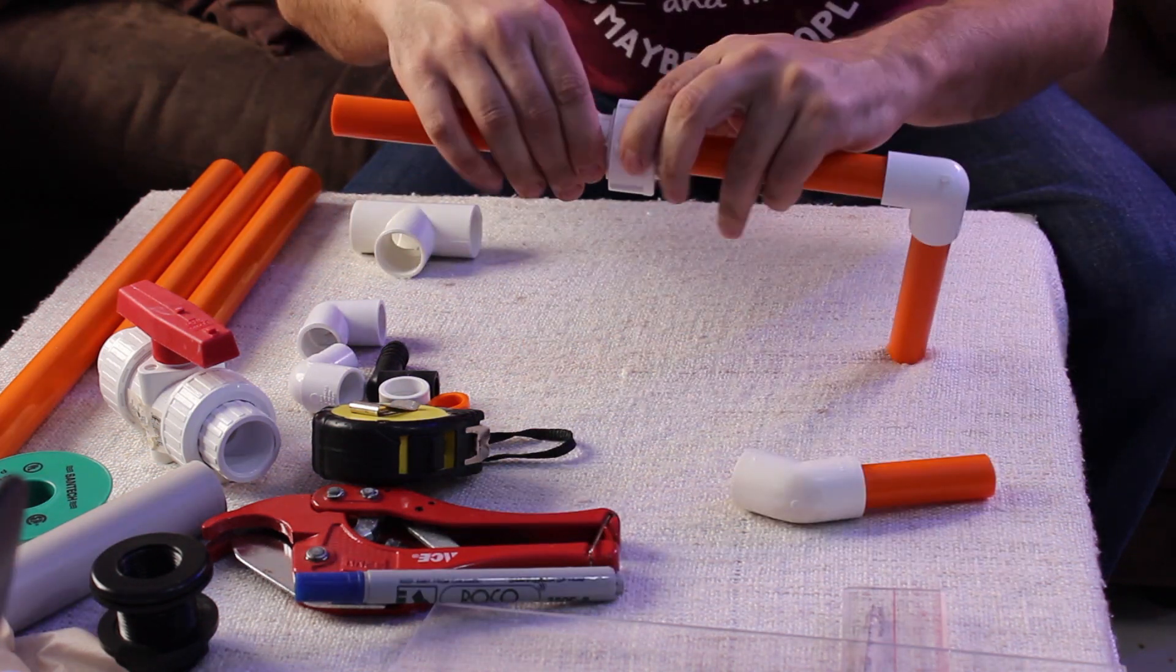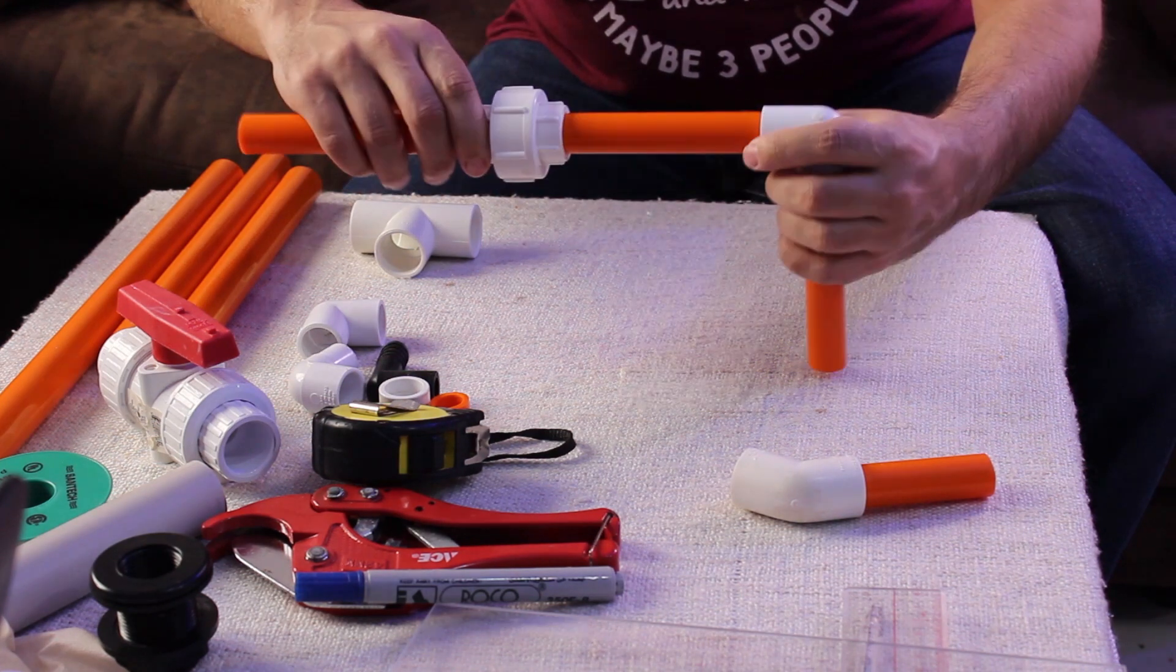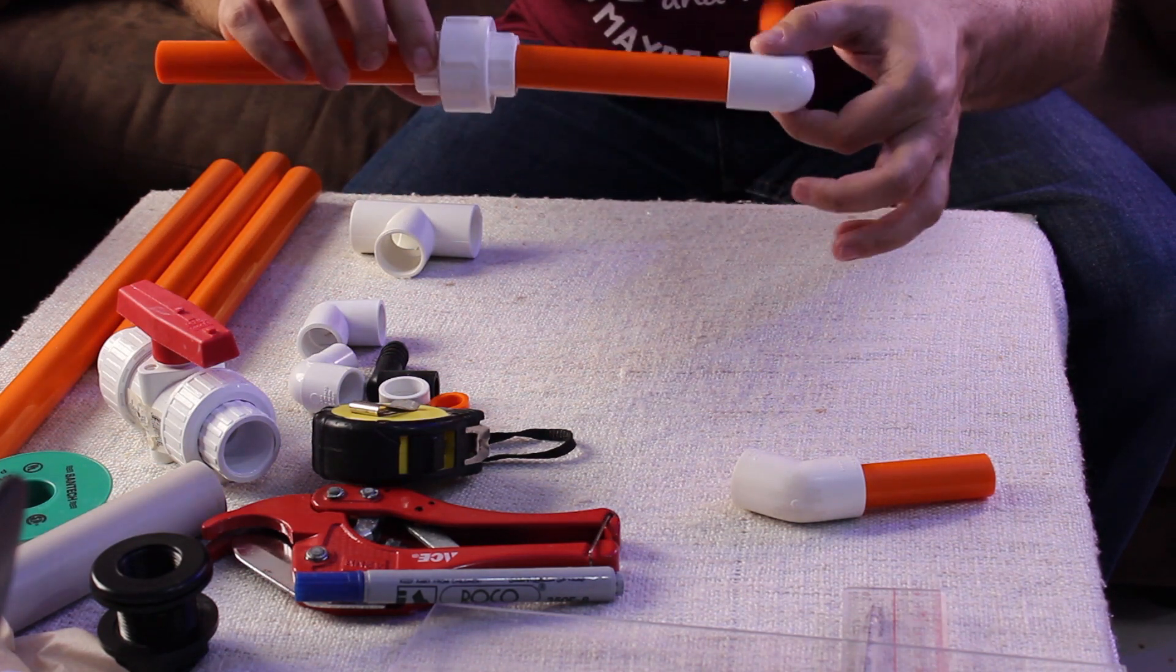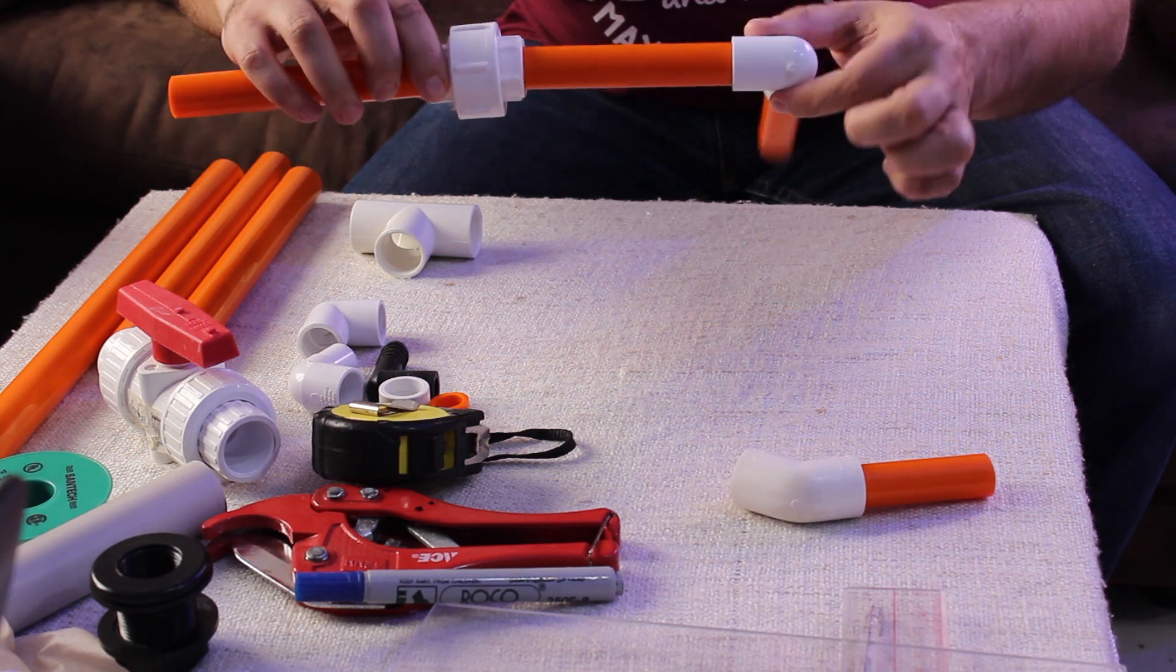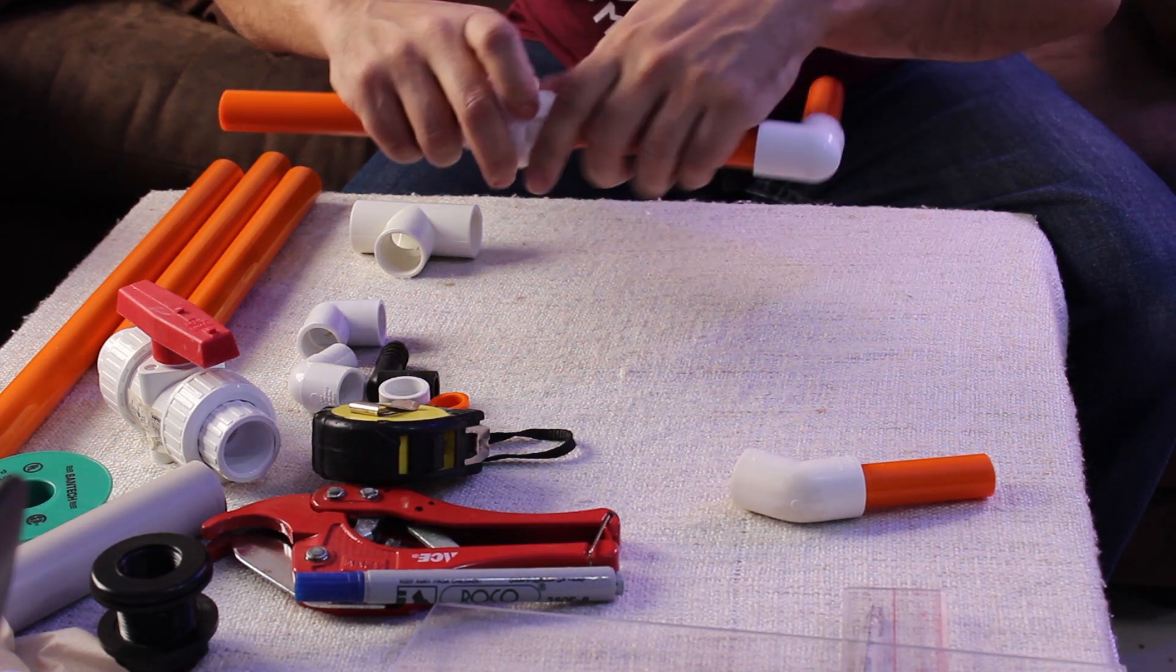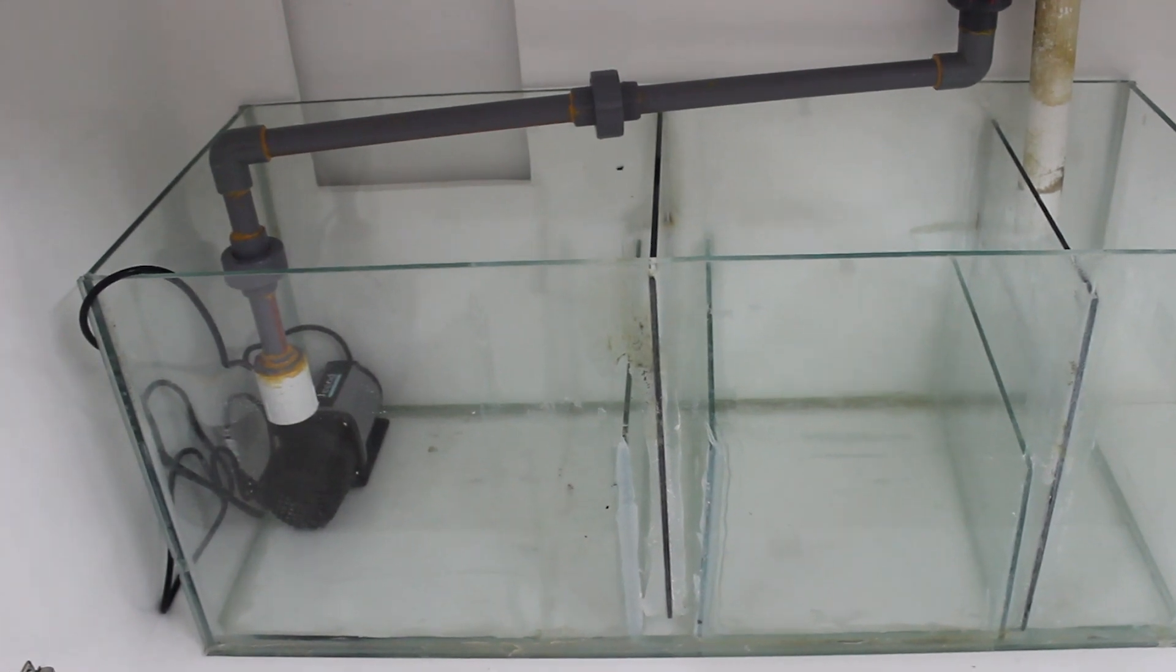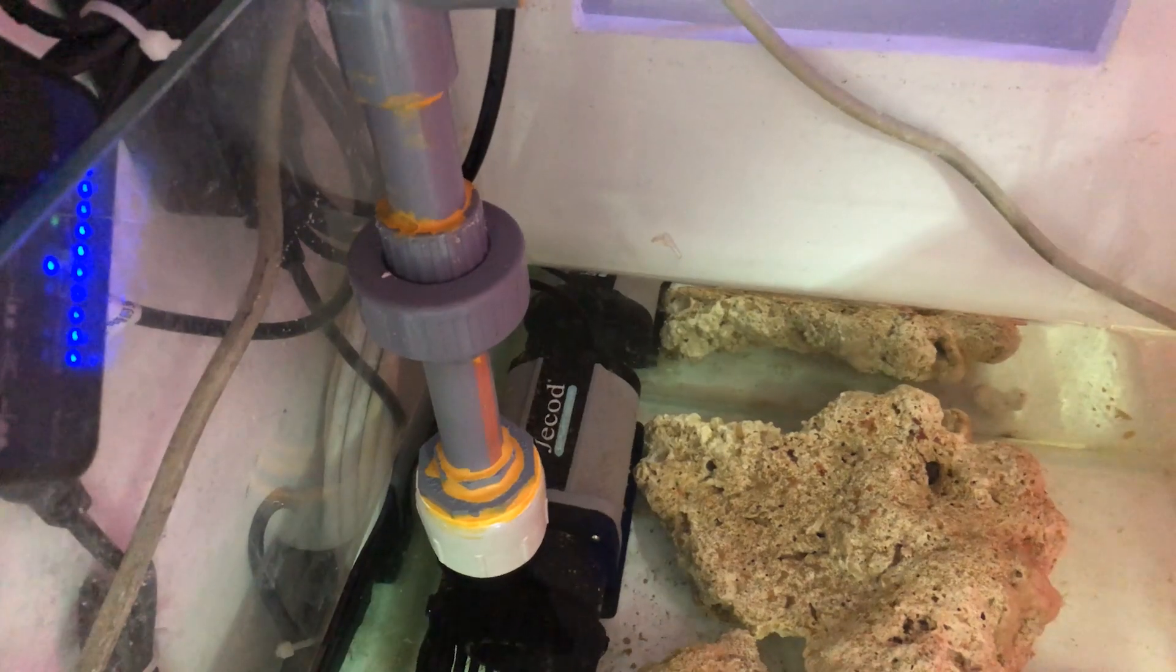The union fitting is very useful in disassembling and assembling the plumbing without cutting. It's a good idea to have a union fitting before every single elbow. This will allow us to rotate the elbow if we glue it incorrectly. It's very useful to install a union just after the pump. This will be helpful to remove the pump from the plumbing to clean it or to maintain it and then put it back together.